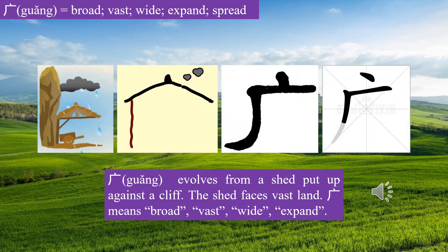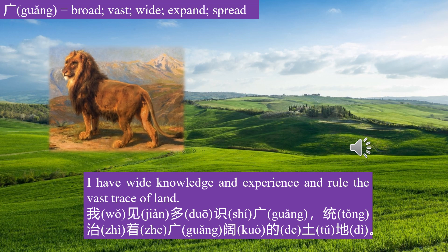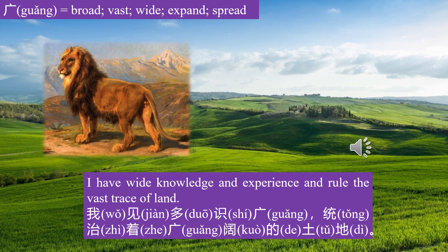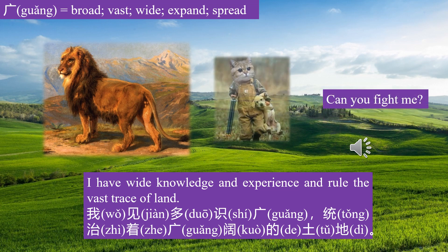Let's learn character Guǎng. Guǎng evolves from a shed put up against a cliff. The shed faces vast land. Guǎng means broad, vast, wide. I have wide knowledge and experience and rule the vast stretch of land. 我见多识广，统治着广阔的土地。